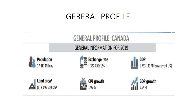General information for 2019: the population is 37.411 million. The land area is 9.093 million square kilometers. CPI growth is 1.5 to 1.95%. GDP growth is 1.65 to 1.64%.